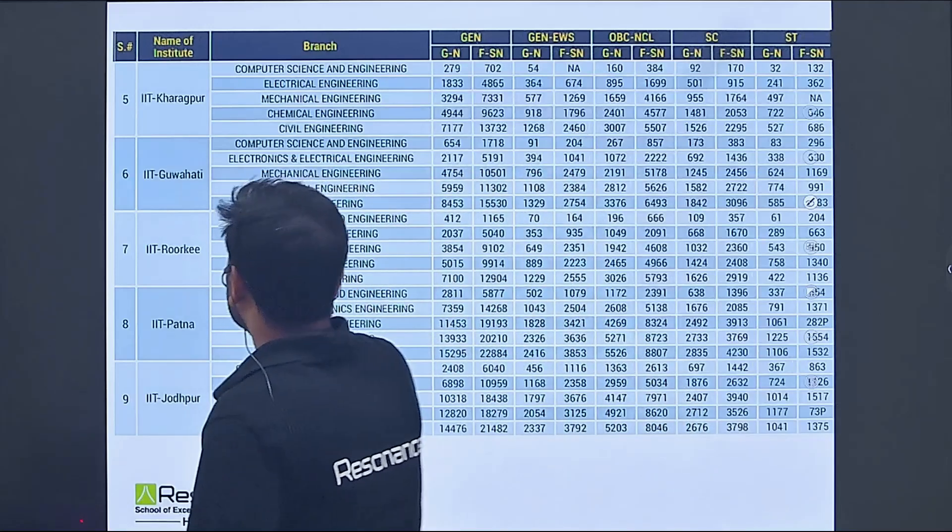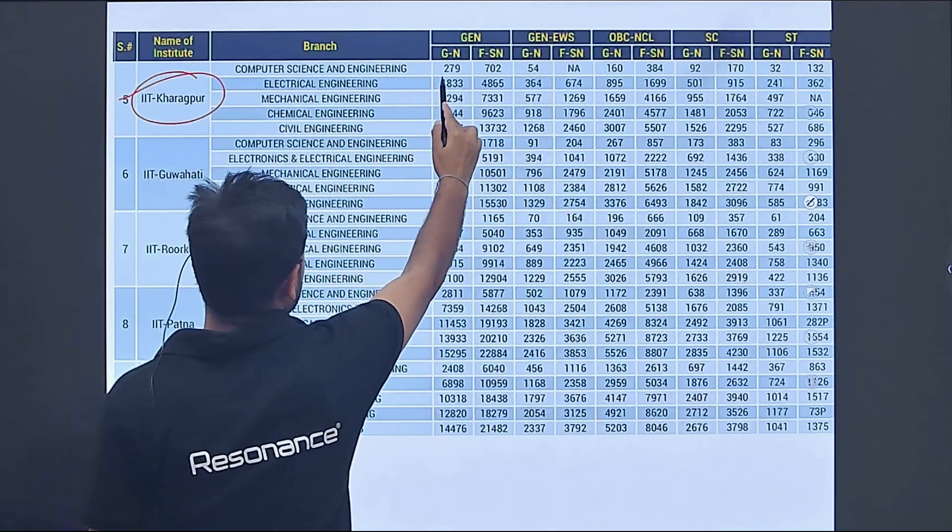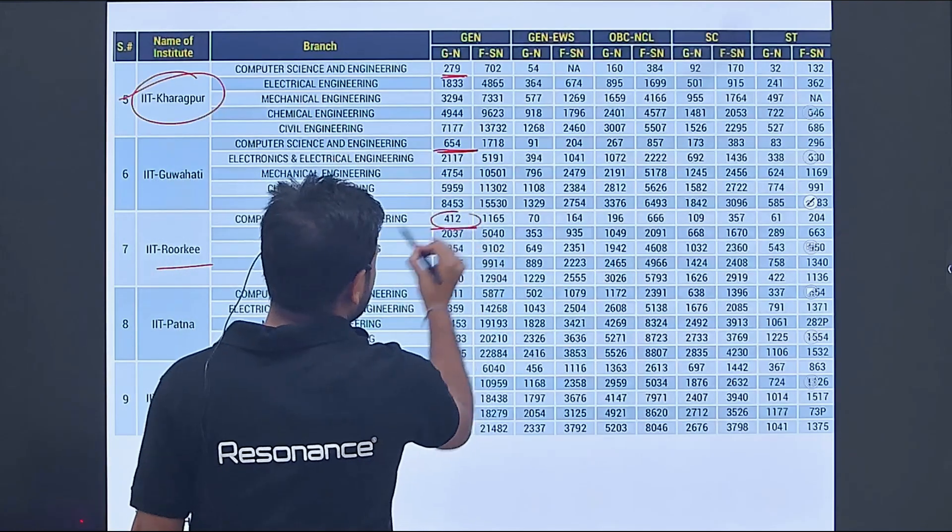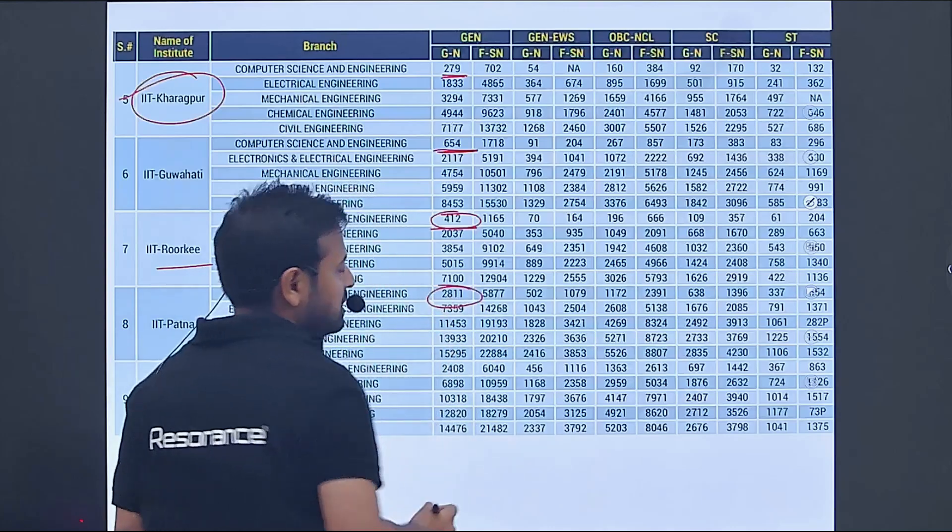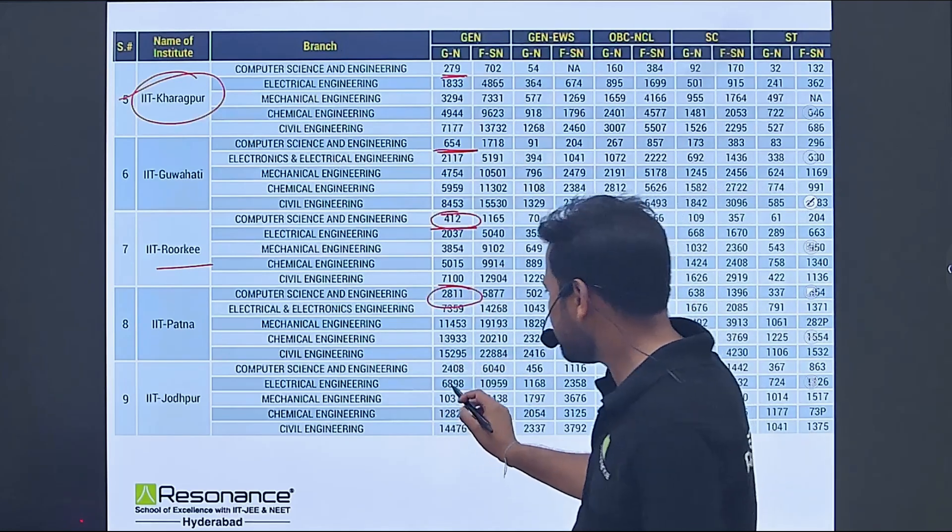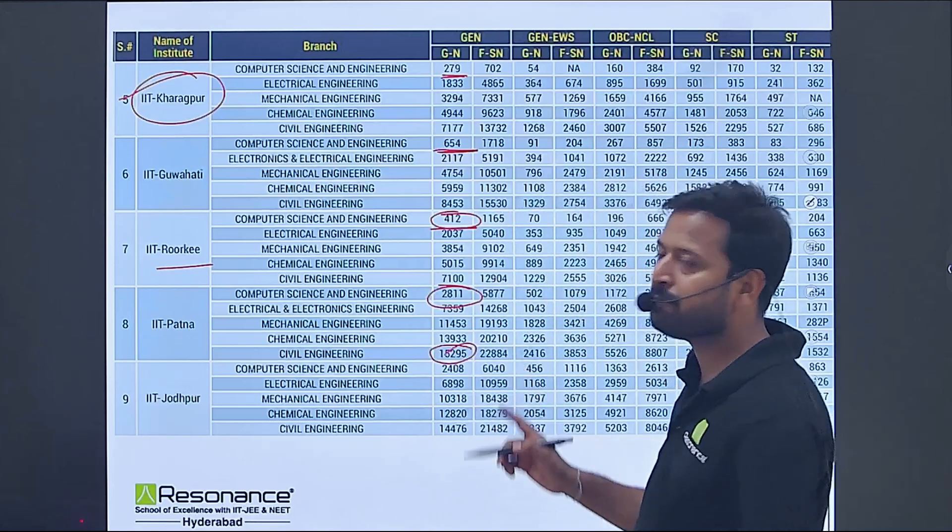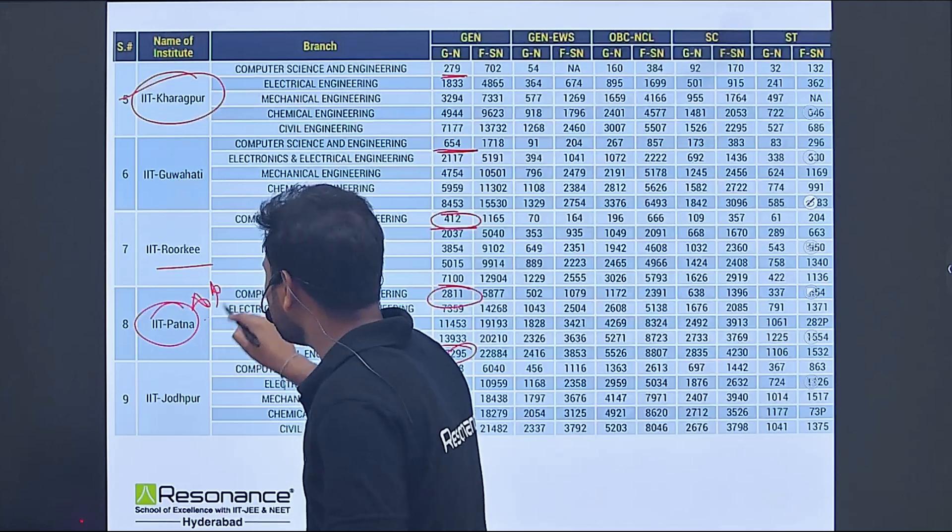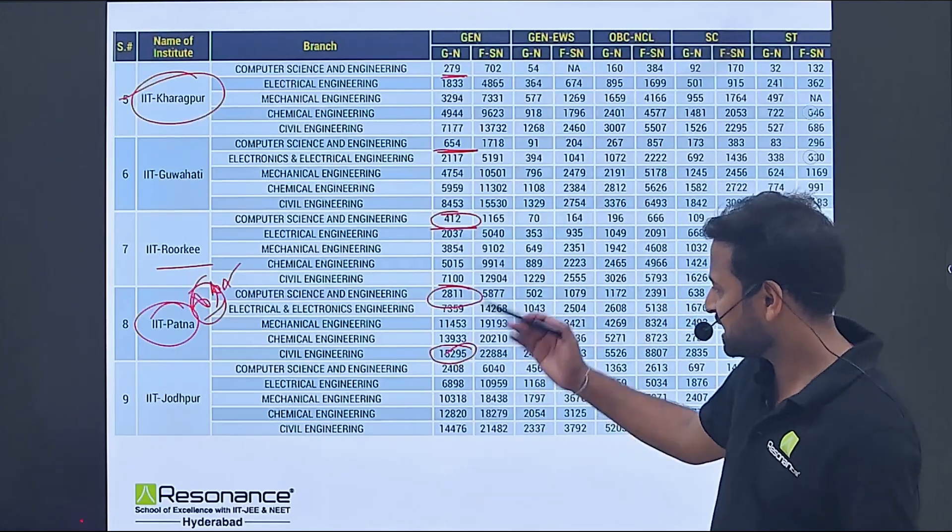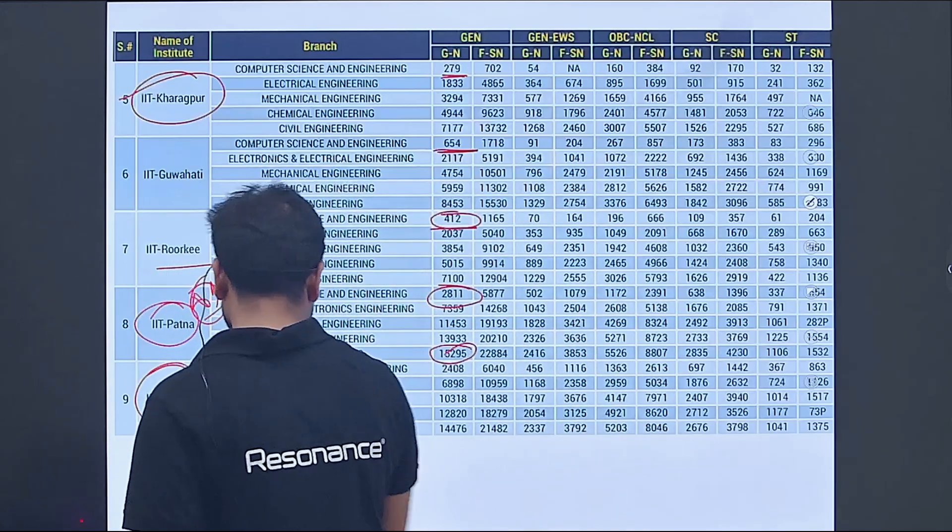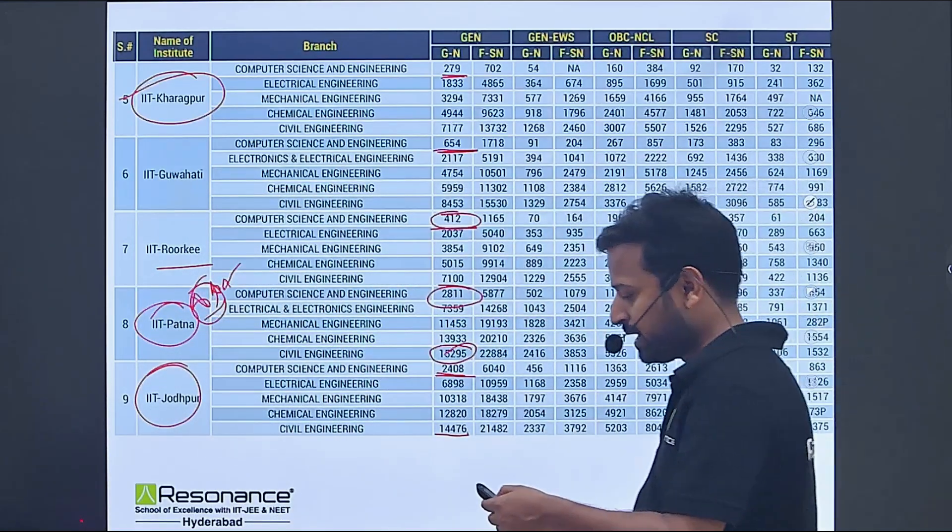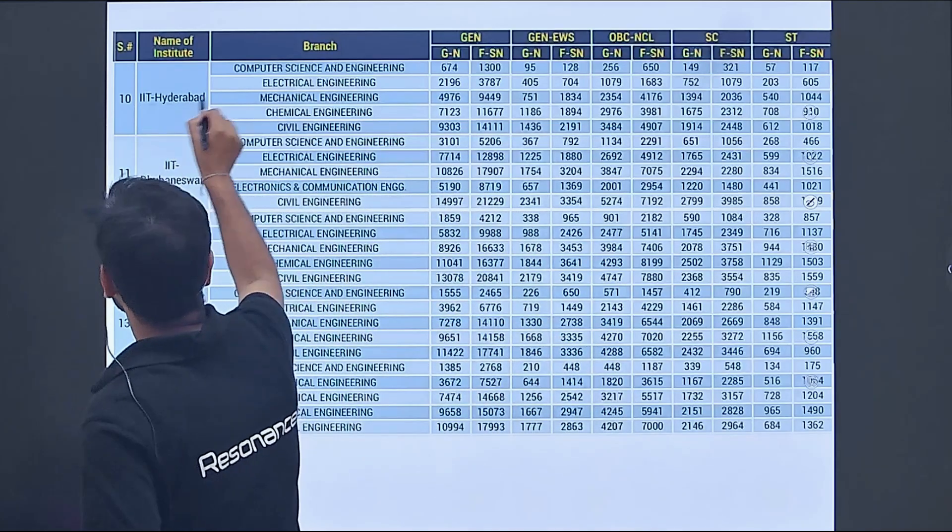IIT Kharagpur, number five college, CSE closed at 279. IIT Guwahati CSE was 654. IIT Roorkee CSE closed at 412. IIT Patna 2811 - if you have a rank like 3000, you can expect CSE here. For civil engineering, 15295. One important thing - IIT Patna is the most special college because it has introduced 90 plus seats, so many branches, so you can expect major variations in IIT Patna.